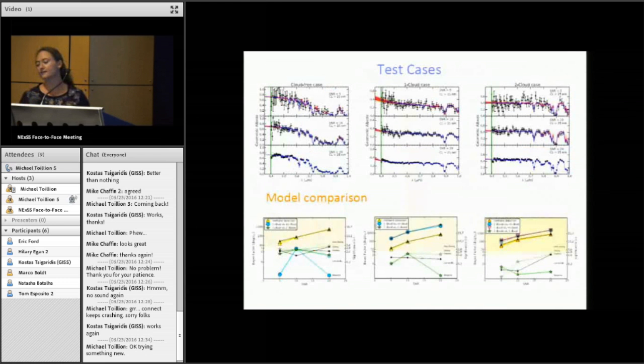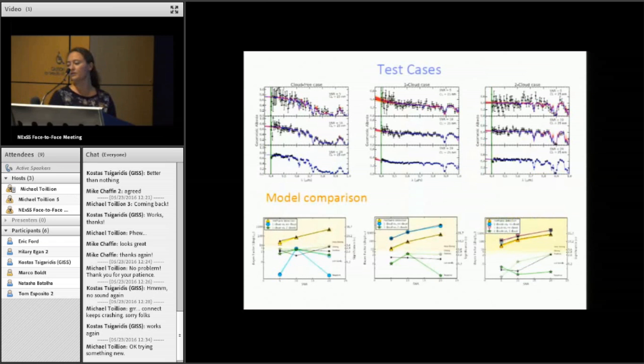So these are just some test cases showing you how we validated this retrieval technique on different forward models. Starting from a cloud free case, a case with just one cloud, and a two cloud case where the top cloud is relatively optically thin. And from top to bottom, you can see our simulation of the noise model from a signal to noise of 5 to a signal to noise of 20. And it's going to be important how we define it because it's going to vary across the band pass, and we're still working on that.